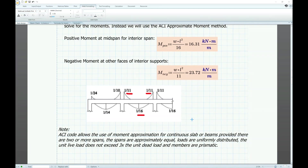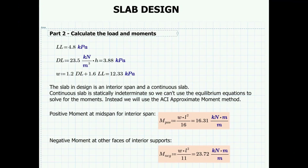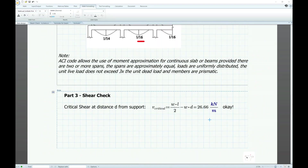Please note that the ACI approximate moment method is applicable for continuous slabs or beams provided: there are two or more spans, the spans are approximately equal, loads are uniformly distributed, the unit live load does not exceed three times the unit dead load, and the members are prismatic. As you can see, the negative moment is larger than the positive moment, meaning we will have to provide more reinforcement at the support areas.